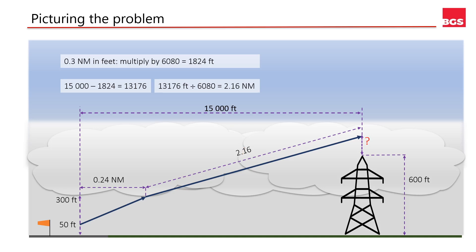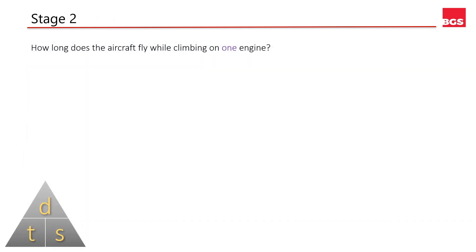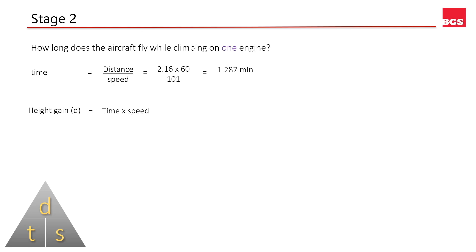All we have to do now is work out how long we'll be climbing at the single-engine climb rate of 400 feet per minute. Time is distance over speed. We have the distance of 2.16 nautical miles and the speed. Multiplying by 60 to get the time in minutes gives 1.287 minutes. Height gained equals time multiplied by rate of climb. With the climb rate of 400 feet per minute, this gives us 515 feet of height gained on the single engine.